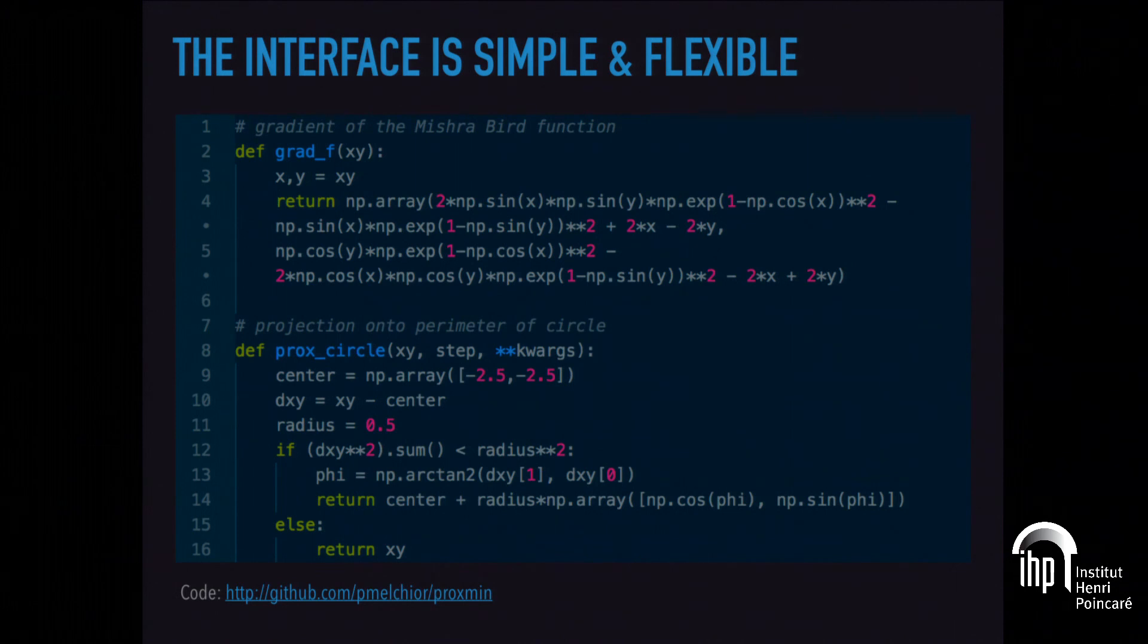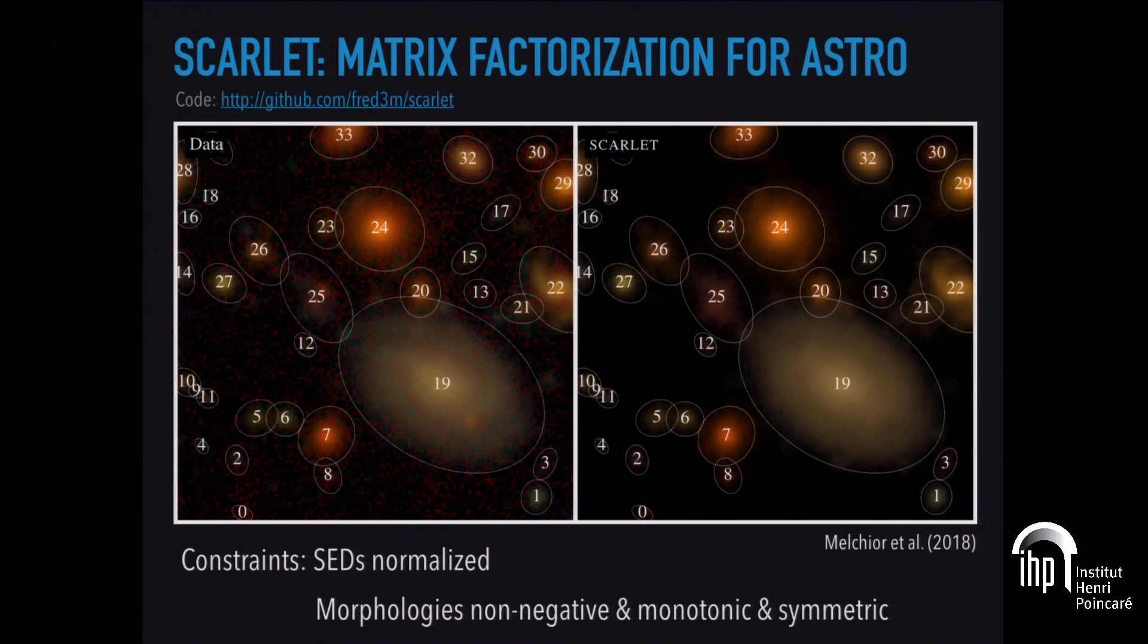The interface really is simple. These proximal operators for the circle is really a few lines. The only thing it does is it calculates whether you're outside of some radius. If you're not outside, it projects you onto that radius. There's code for doing that is up on my GitHub page. You can experiment with this. I encourage you to do so because whenever you hit a constrained optimization problem, I find these algorithms extremely convenient.